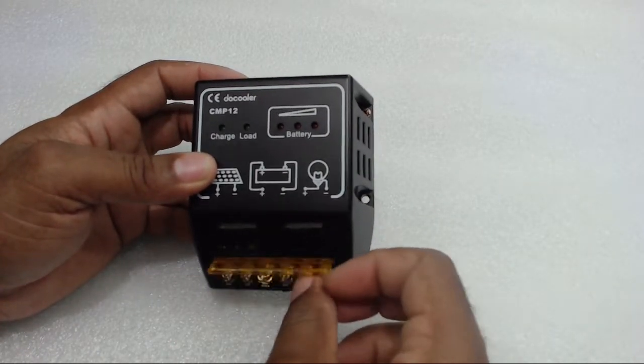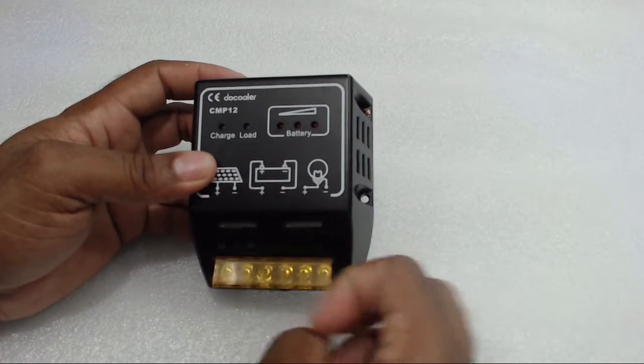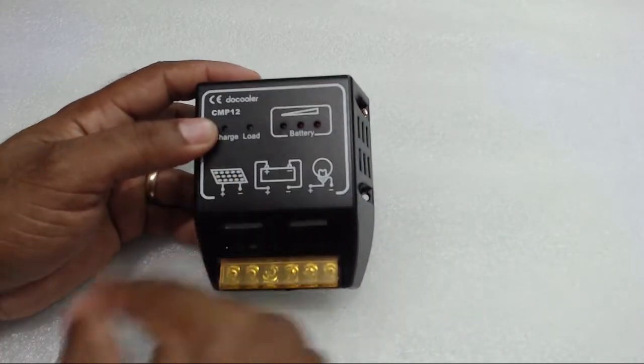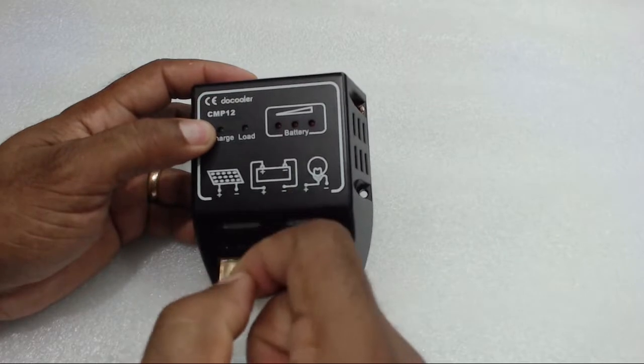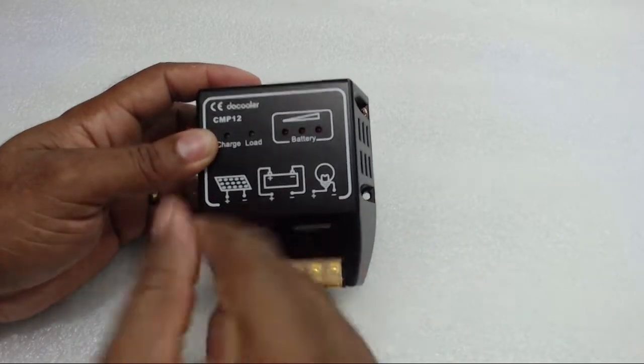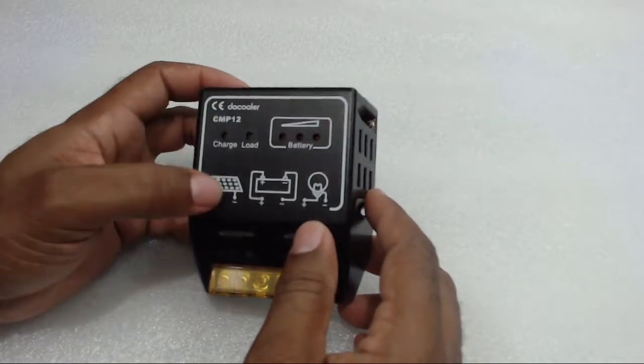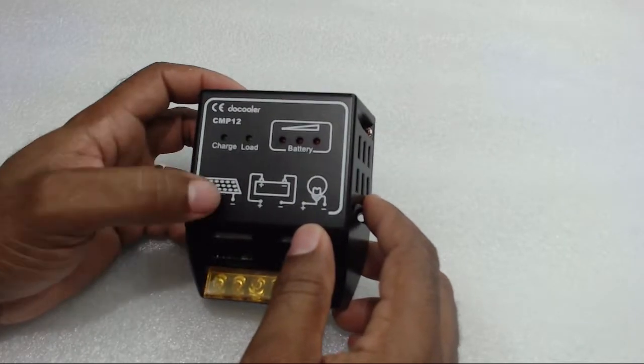If something goes wrong and your battery gets disconnected, disconnect your panel then reconnect your battery then connect your panel. Always connect your solar panel after you connect your battery.